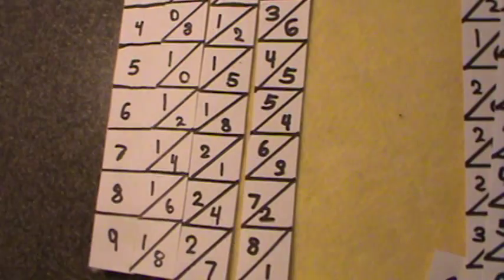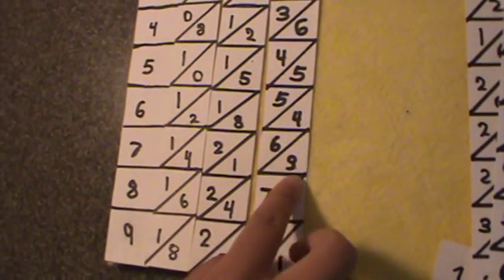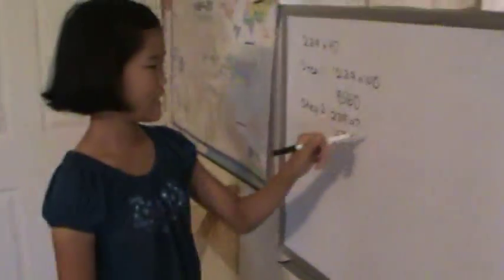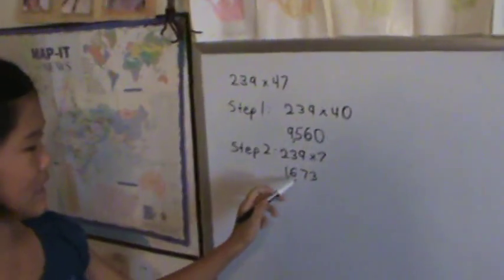After that, you get to 1 and 6, which is 7, and then 3. You do not have to add a 0 to the end of it because it is not a 10 number. So your number is 1,673.